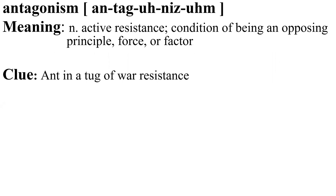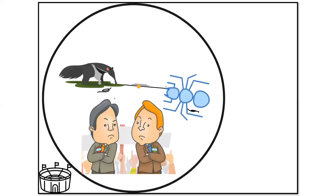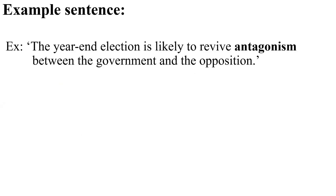Antagonism — active resistance; the condition of being an opposing principle, force, or factor. Clue: an ant in a tug of war showing resistance. Visualize the ant in a tug of war. Example: the year-end election is likely to revive antagonism — active resistance — between the government and the opposition.